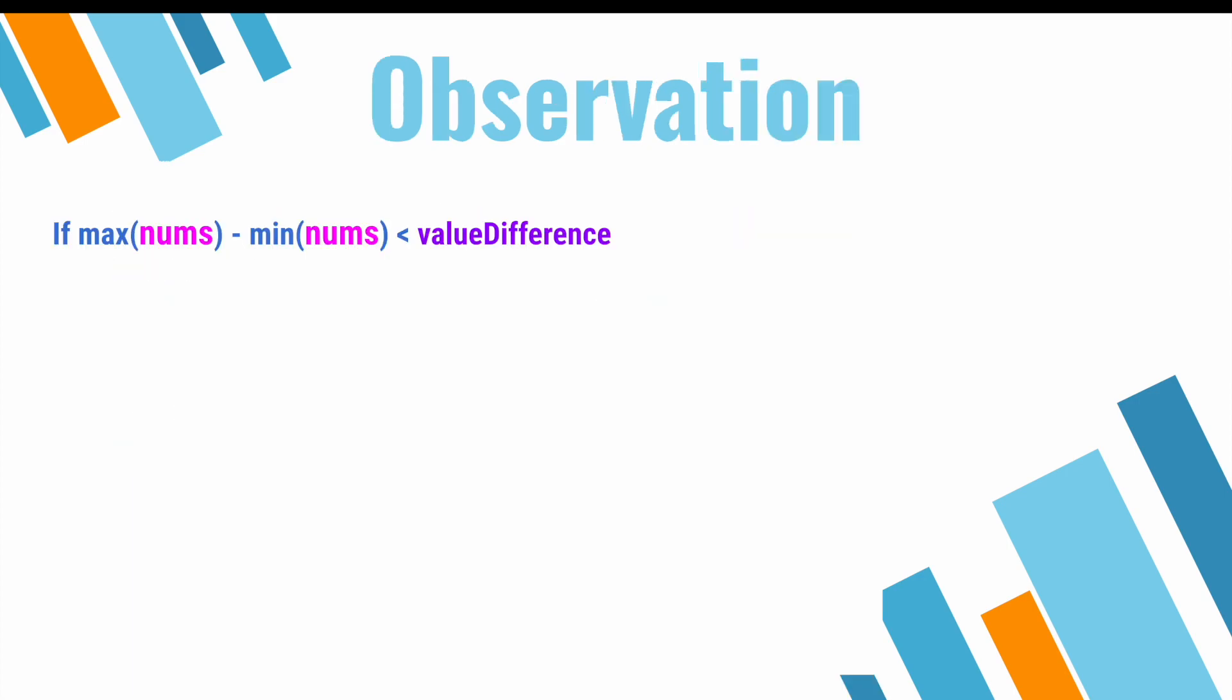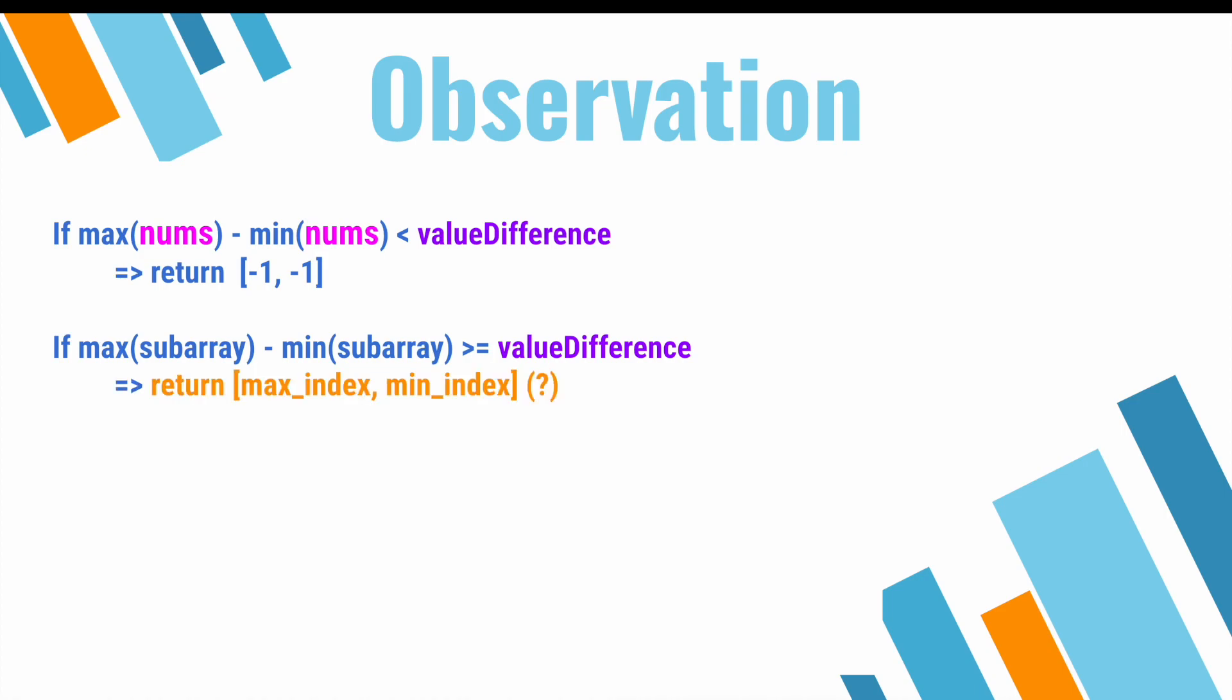The first thing we should note is that if the difference between the maximum and minimum values of the given array are less than value difference, then we return negative 1, negative 1, since the difference between the max and min is going to be the maximum possible difference. Then, one slippery slope we might go down is applying the same logic to an arbitrary subarray within the given nums array. This is convenient since we could then do a one-pass solution, keeping track of the running maximum and minimum value we've seen so far, and checking the difference between them.